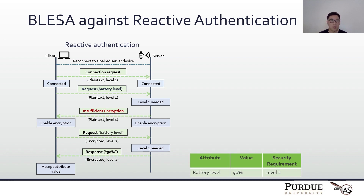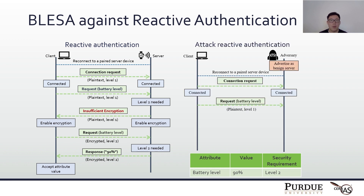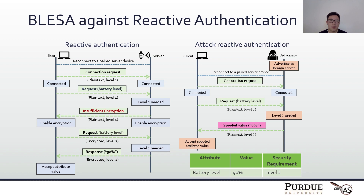Now let's see how BLISA can attack this. First, the attacker clones the MAC address of the server and advertises as the server, so that when the client reconnects, it connects to the attacker instead. The client establishes the connection and sends a request for battery level to the attacker at security level 1. The attacker can directly send a spoofed value — 0 — to the client. Since the client does not receive an error message, it doesn't enable encryption, and it receives and accepts the spoofed value, which is 0.